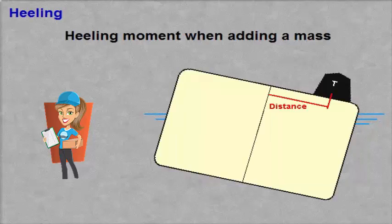When adding a mass which is not in the centre line of the ship, the ship will heel due to the heeling moment created by the added mass. The heeling moment is dependent on the weight of the mass and its distance from the ship's centre line. G moves towards the added mass.